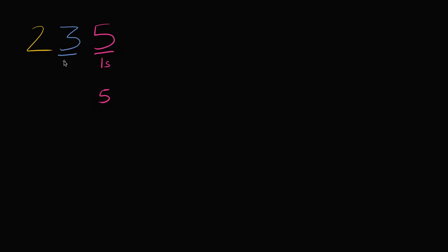This three is in the tens place, so we have three tens — that's going to be 30. And the two is in the hundreds place. So putting a two there means that we have two hundreds.